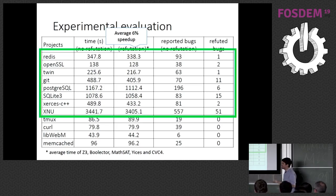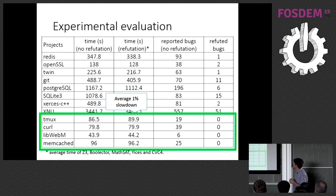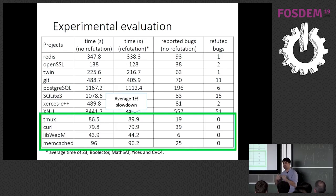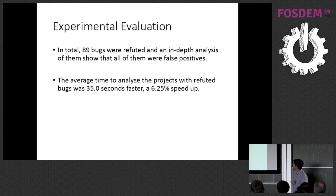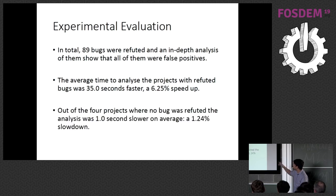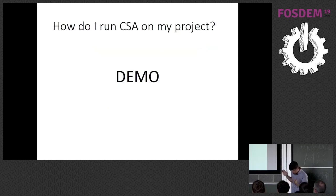On projects where no bugs were removed, the overhead is minimal: about 1% slowdown. In total, 89 bugs were refuted. On average there was a 35-second speedup per project (around 6.25%) when bugs are removed, and only about a 1–1.4% slowdown when there are no bugs to remove.